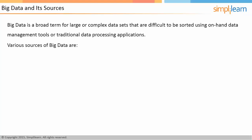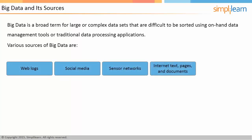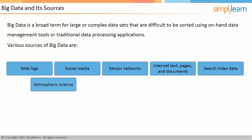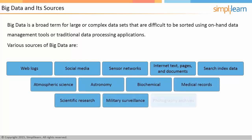Various sources of big data include web logs, social media, sensor networks, internet text, pages and documents, search index data, atmospheric science, astronomy, biochemical, medical records, scientific research, military surveillance, and photography archives.